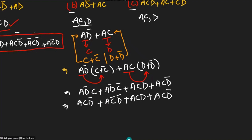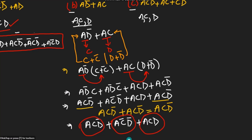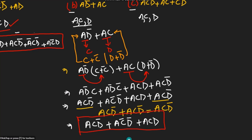We can easily see that acd' appears twice. By Boolean algebra, acd' + acd' = acd'. So combining the duplicate terms, the final standard sum of products form is: acd' + ac'd' + acd. Each term is composed of all variables in the domain {a, c, d}, which confirms this is the standardized sum of products expression.